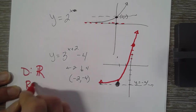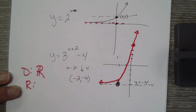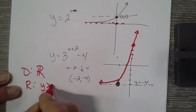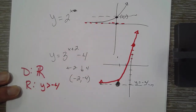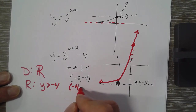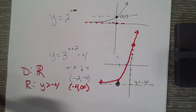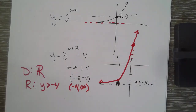The range: is there a point it won't go below? Yes — negative 4. Does it ever reach negative 4? No. So the range is y greater than negative 4, or in interval notation, from negative 4 to infinity. The horizontal asymptote tells you the minimum or maximum, which helps you find the range.